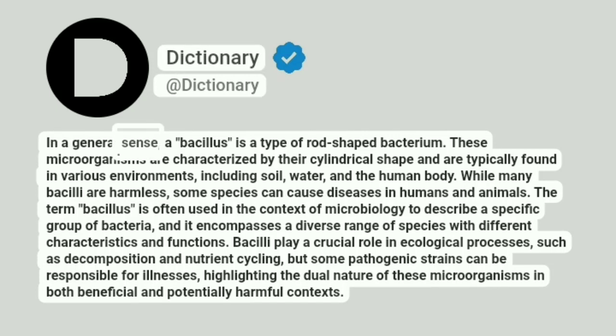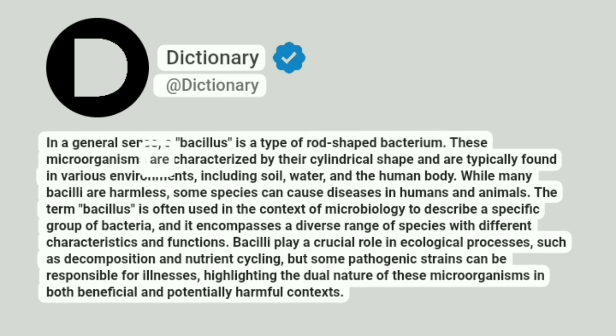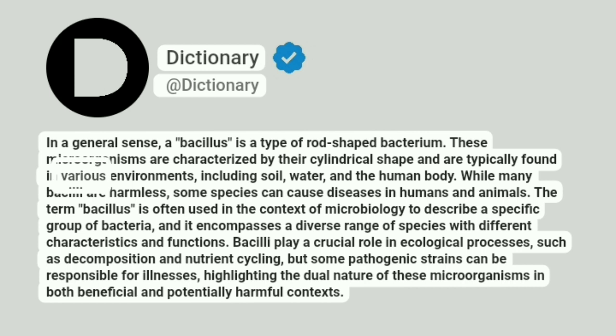In a general sense, a bacillus is a type of rod-shaped bacterium. These microorganisms are characterized by their cylindrical shape and are typically found in various environments, including soil, water, and the human body.